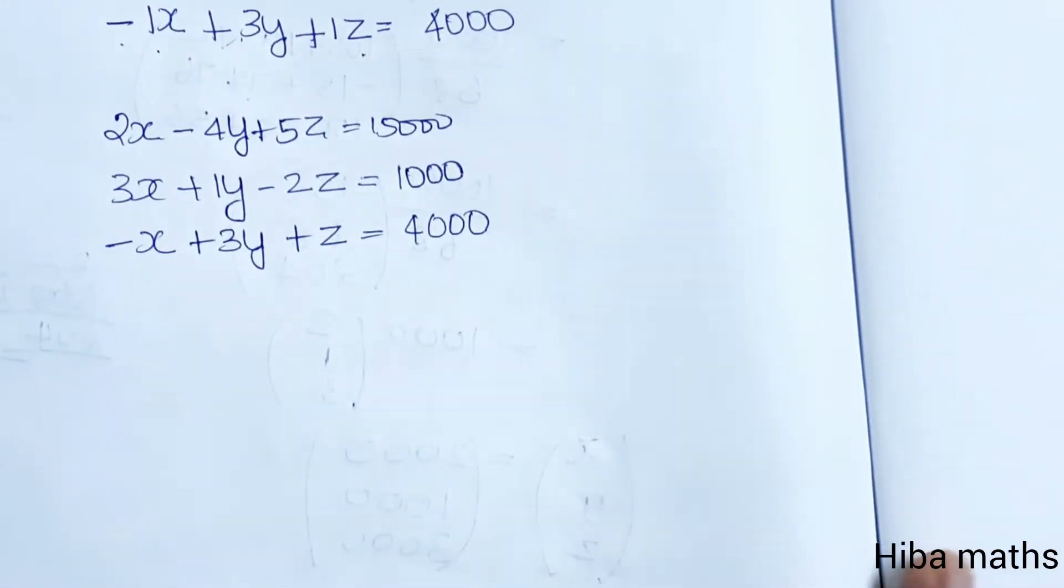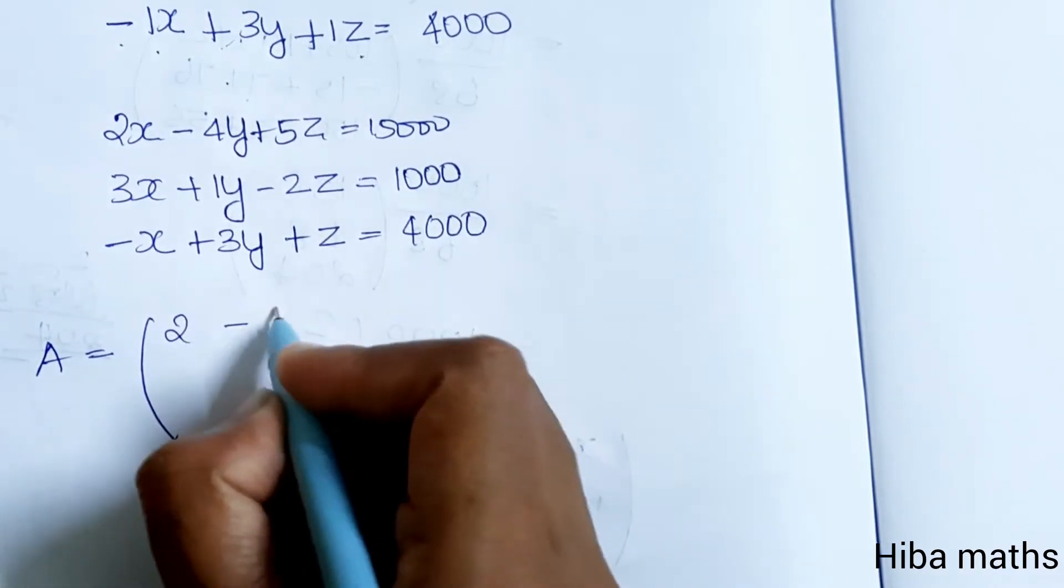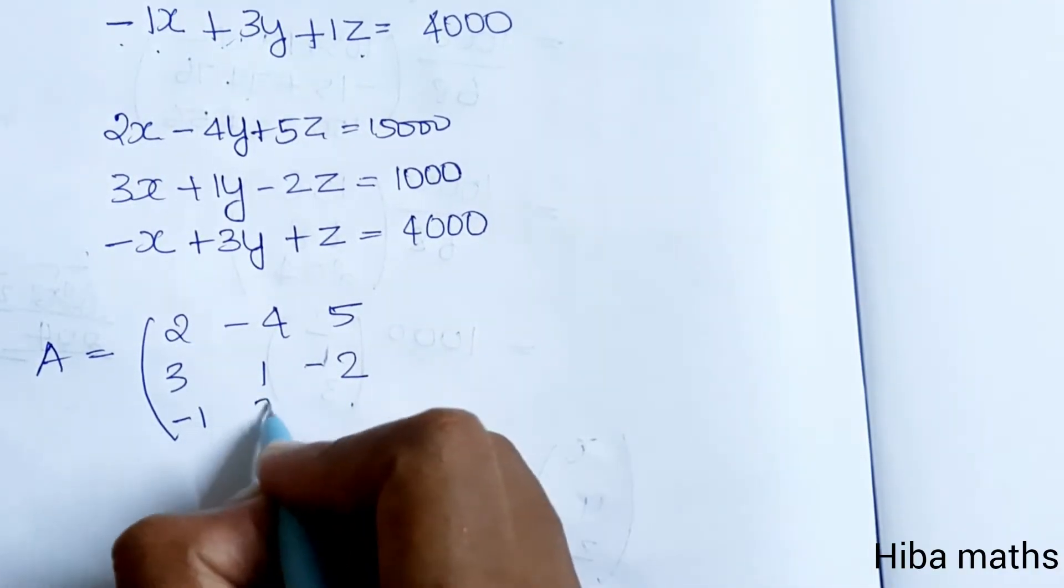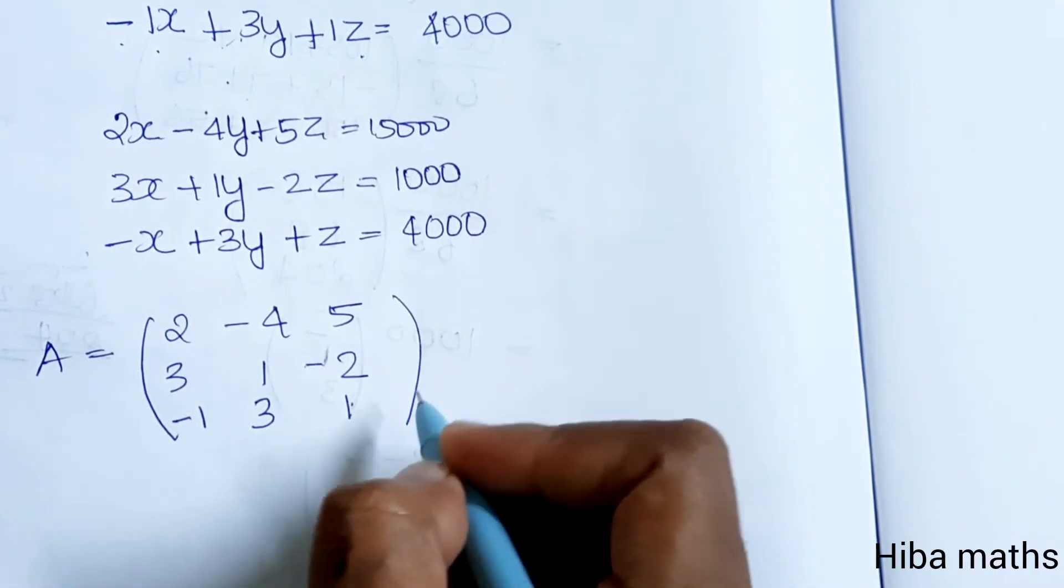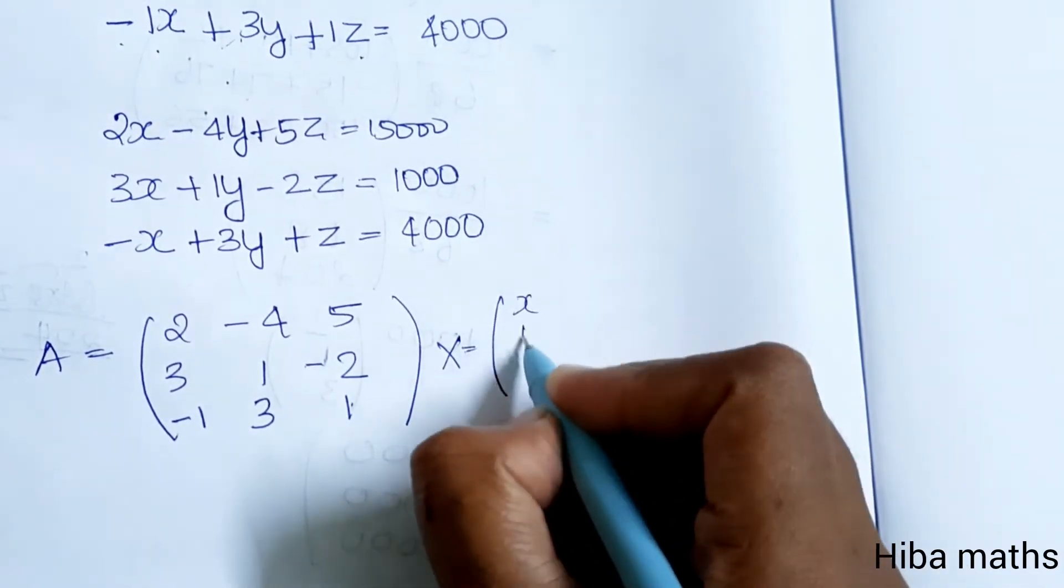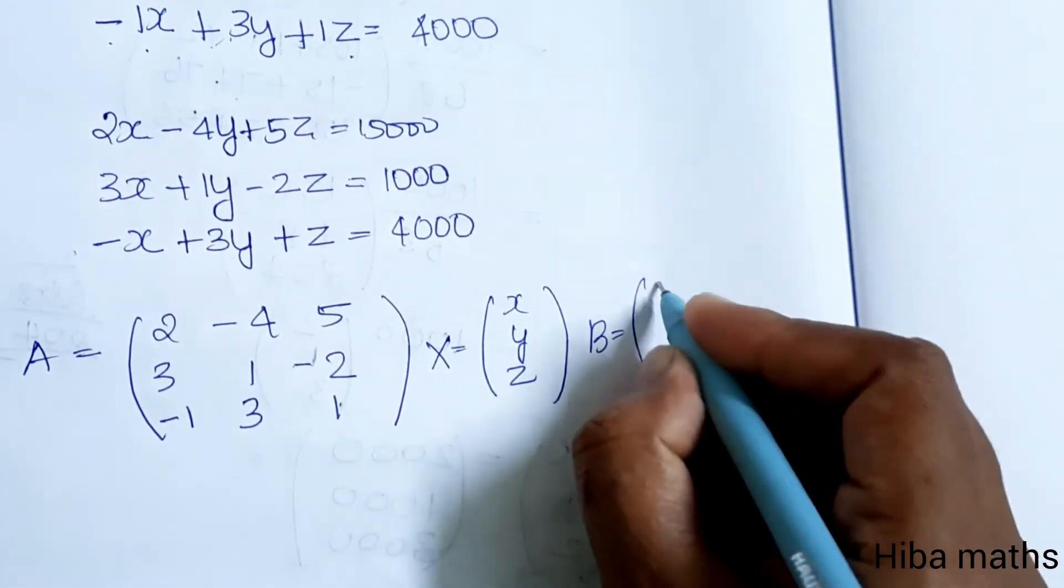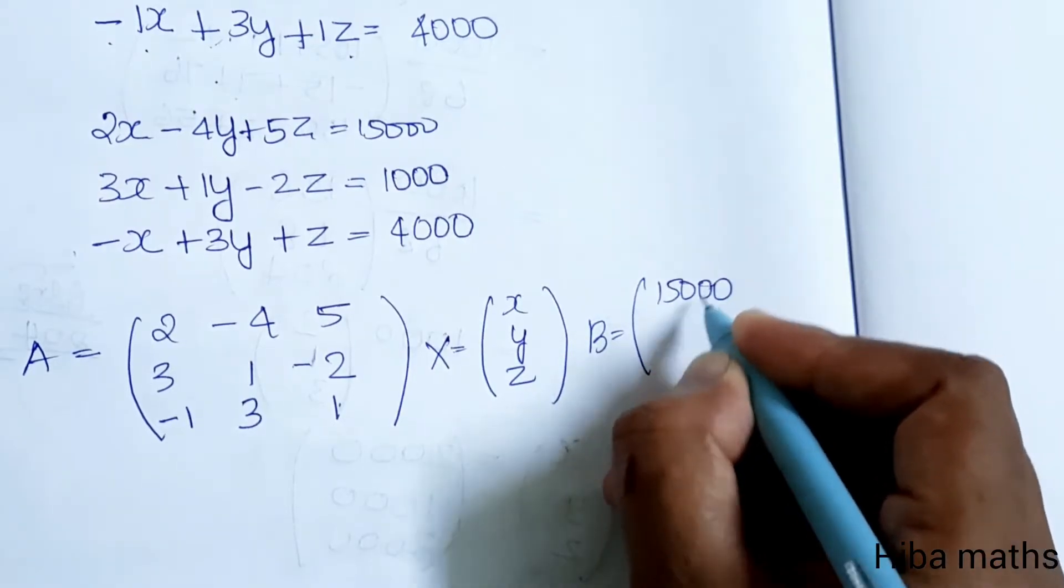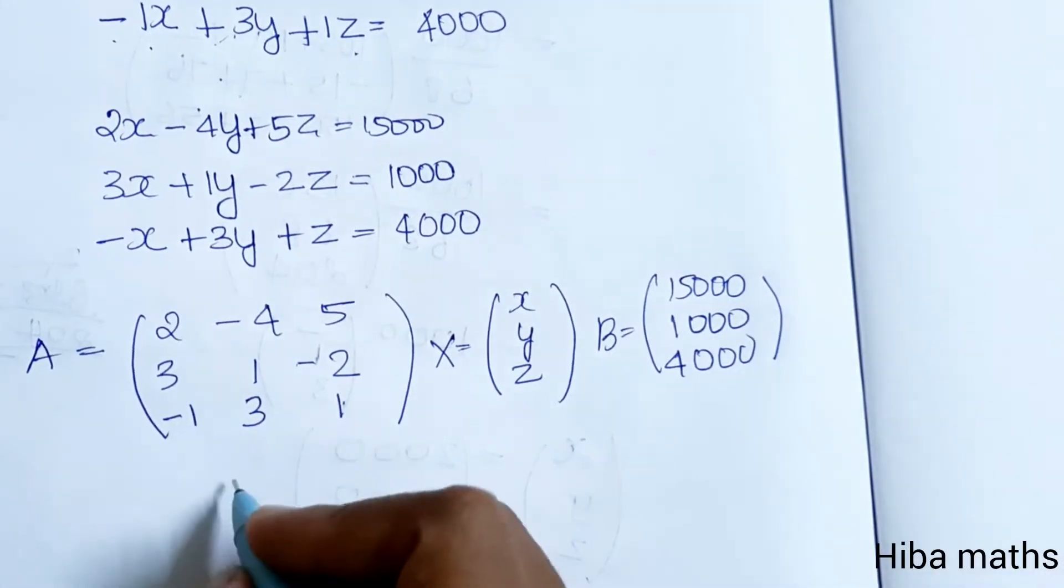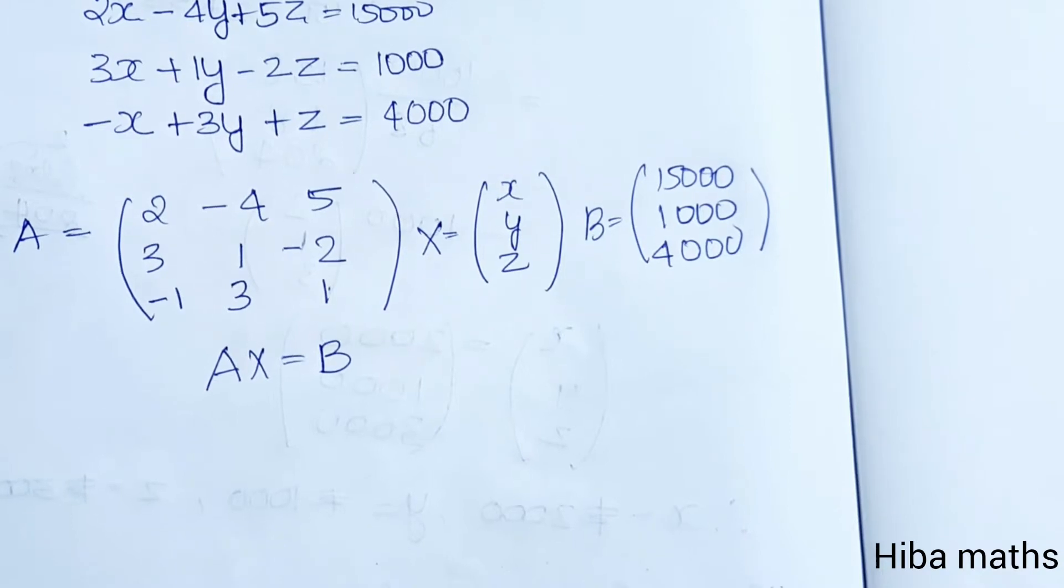Matrix A is 2, minus 4, 5; 3, 1, minus 2; minus 1, 3, 1. Capital X is the variable matrix with X, Y, Z. And B matrix is 15,000; 1,000; 4,000.